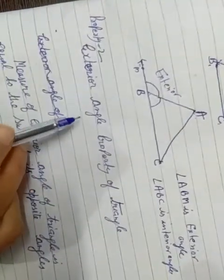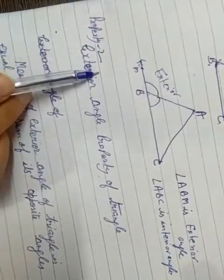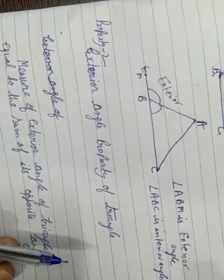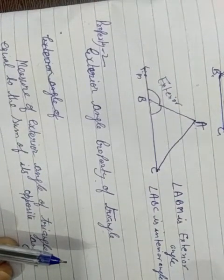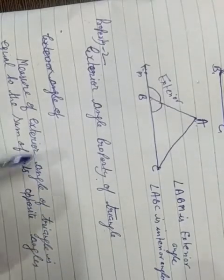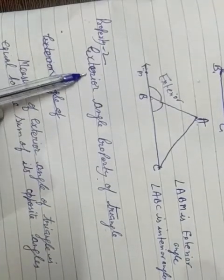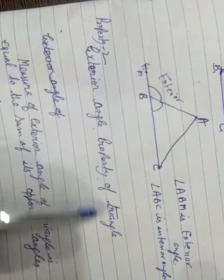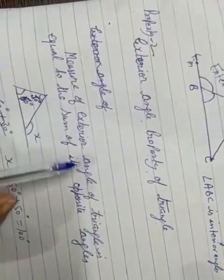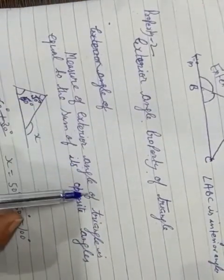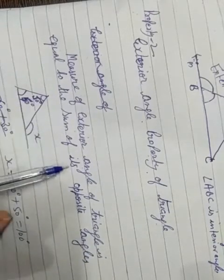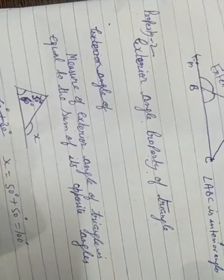Now, the exterior angle property of triangle — this is property number 2. Property number 1 was that the sum of all the angles of a triangle is 180 degrees. Now, property 2 is called the exterior angle property of triangle. The property states: the measure of an exterior angle of a triangle is equal to the sum of its opposite interior angles.